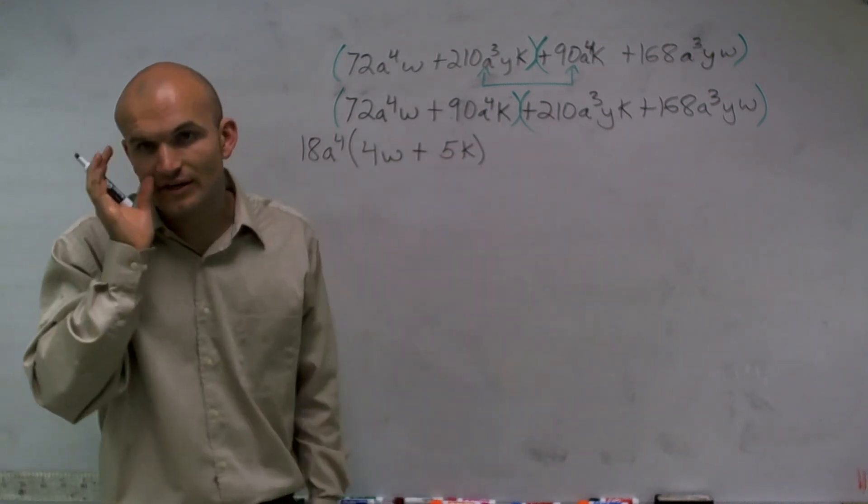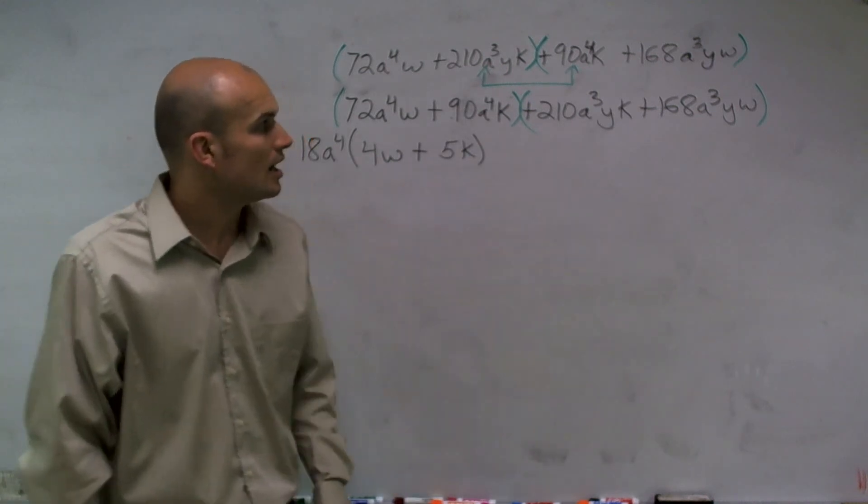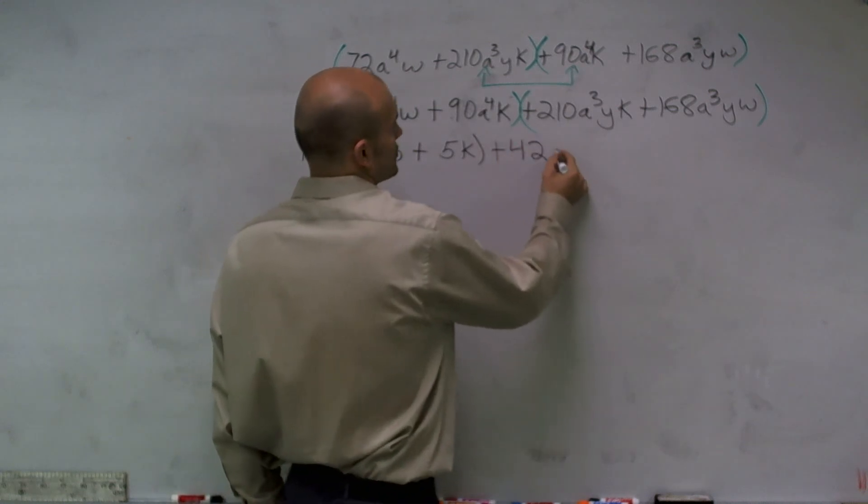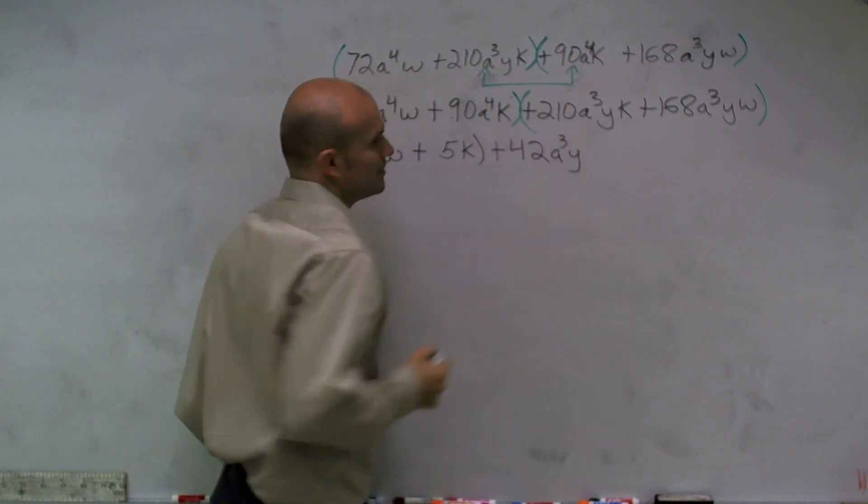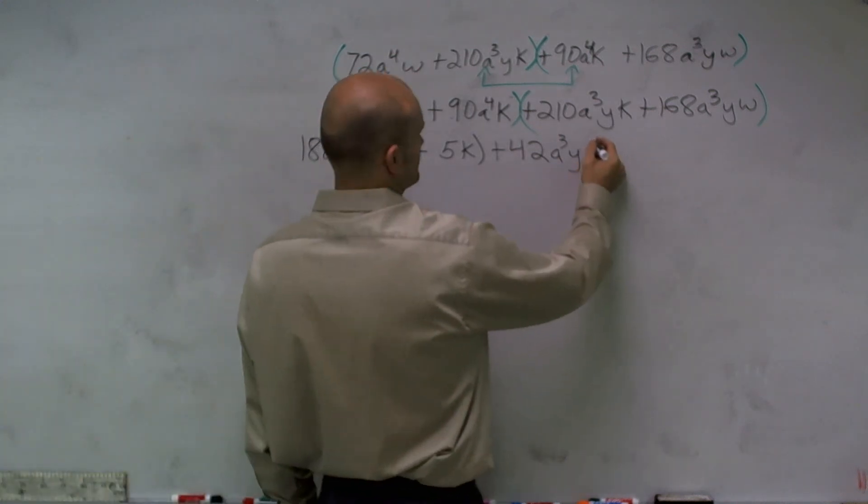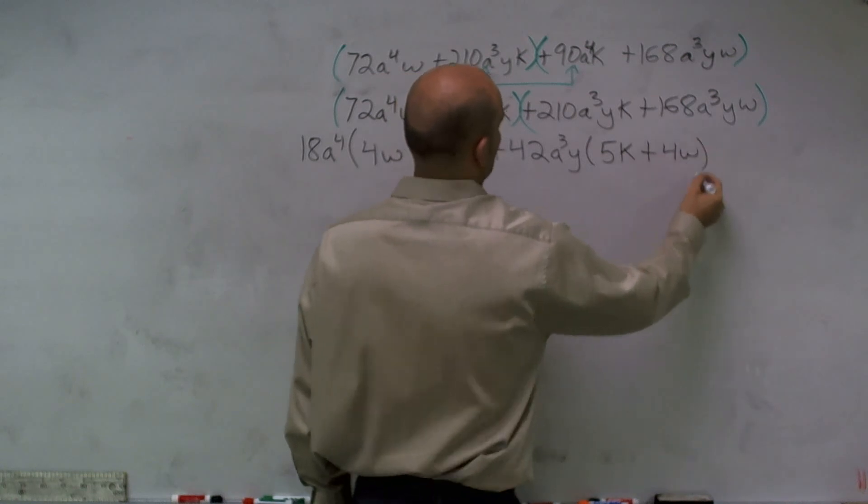Over here, I need to figure out what my greatest common factor is, and what I notice is it's going to be 42. And so when I factor out 42, a³y is the greatest common factor for my variables, I'm left with 5k + 4w.